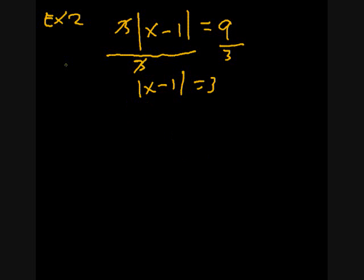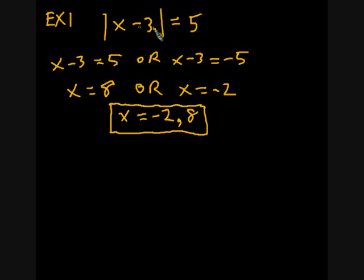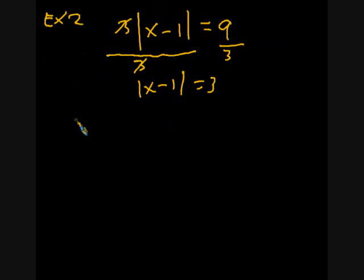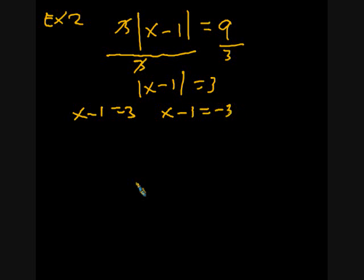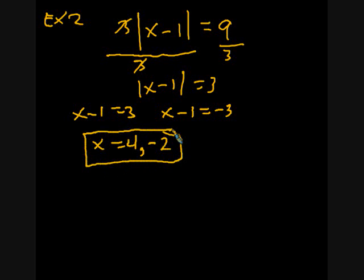From there, we go back to the technique from the last example and break this into two separate equations: either x minus one equals three, or x minus one equals negative three. Solving those, we get x equals four, and adding one to both sides of the second gives us negative two. Students in my class should always box their answers, though I'm going to stop doing that because it's not easy for me to draw.